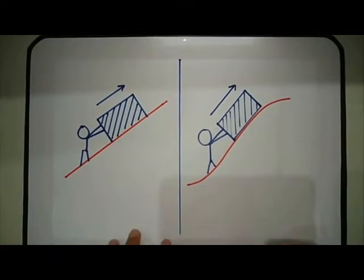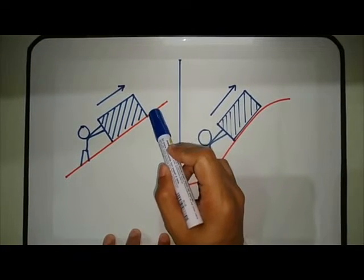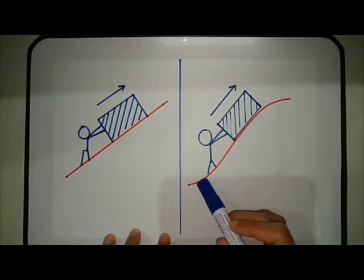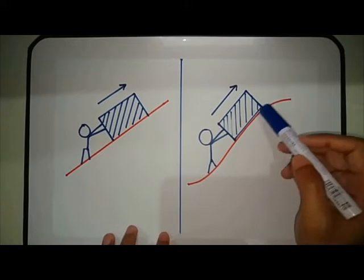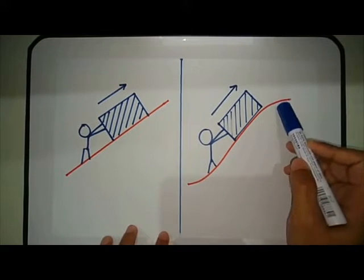In this first figure, the man is pushing a box up a straight incline. In this second figure, the man is pushing a box up but this time, in a curve incline.